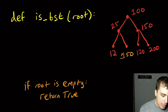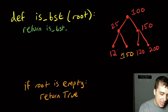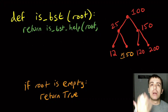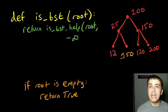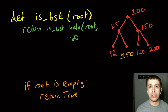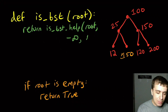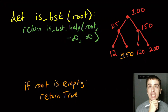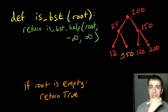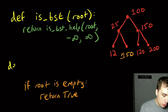I'm going to have isBST immediately return isBSTHelper of root, and this is going to take three parameters: the tree itself, plus the minimum and the maximum. The second parameter will be the absolute minimum any node can be, represented as negative infinity — use int_min or whatever data type you're using. The third parameter is the absolute maximum, represented as positive infinity.